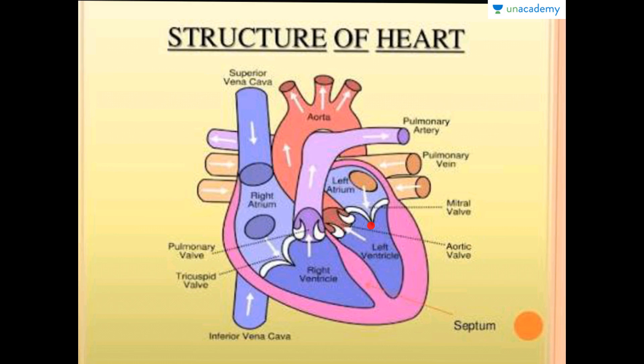In the right atrium we have openings of the superior vena cava and inferior vena cava, which bring blood from all over the body and deliver it into the right atrium. Blood then moves from the right atrium into the right ventricle.